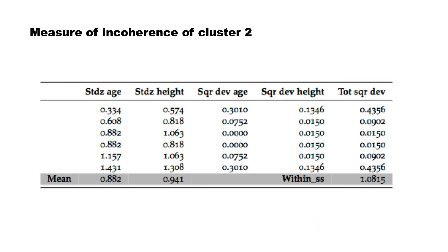Similarly, we compute the measure of incoherence for cluster two. Here again, we work with standardized age and standardized height, not the original values, because we already know that can be problematic. All the values are positive here because this is the second cluster in which all the people are above average height and above average age. The within sum of squares for cluster two is 1.0815.